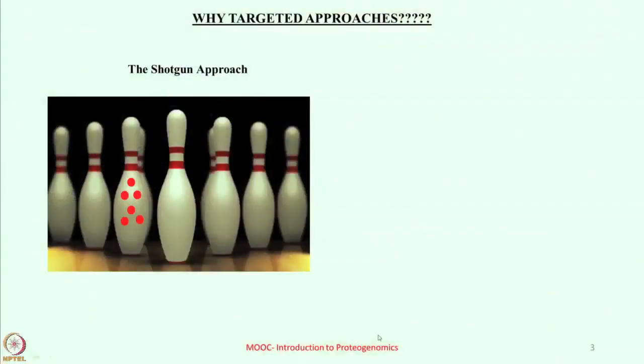Just to give an idea, this is how the shotgun approach looks: you have different targets, and one of the targets—which bears the red dots—is the actual target you wish to hit, but you may or may not always succeed in hitting this target. More often than not you are likely to hit all the other targets along with the target of interest. This pretty much sums up how a shotgun approach works.